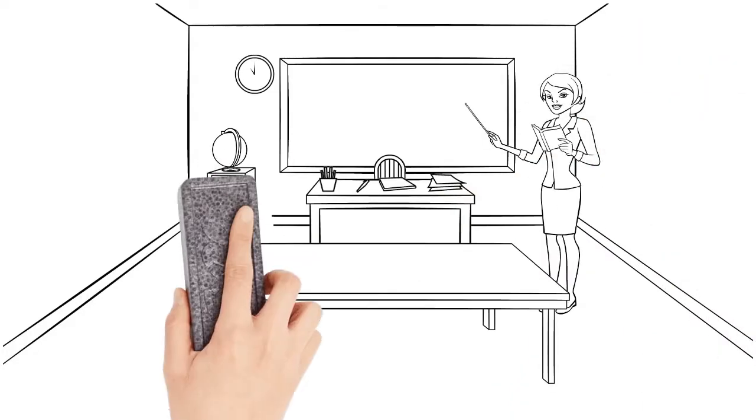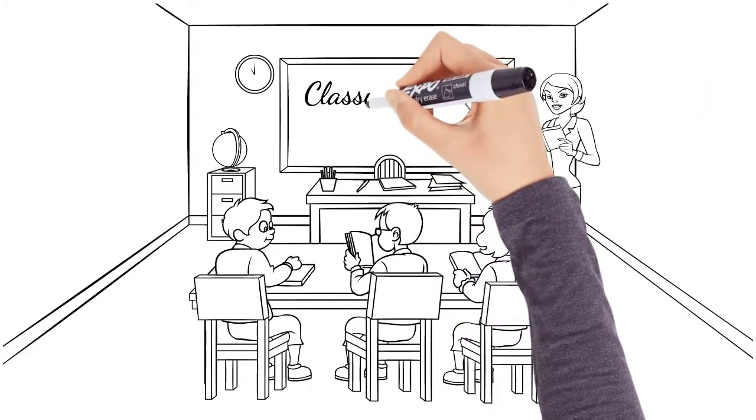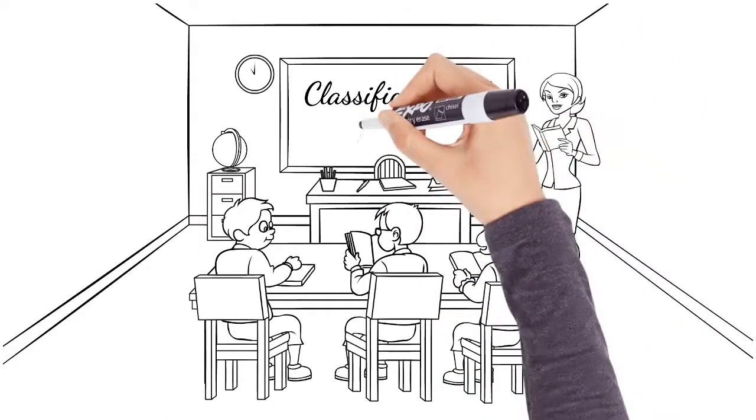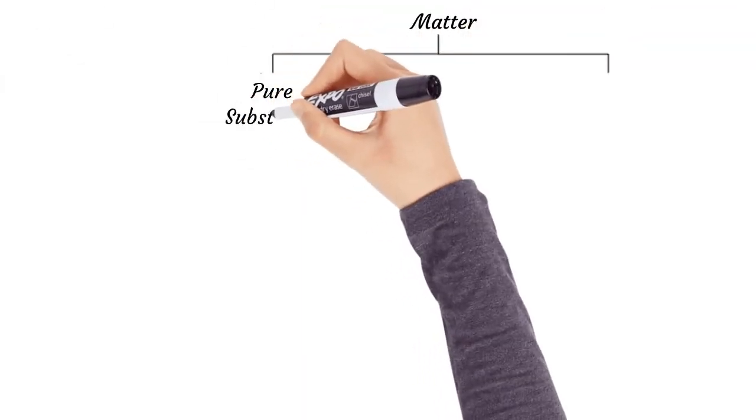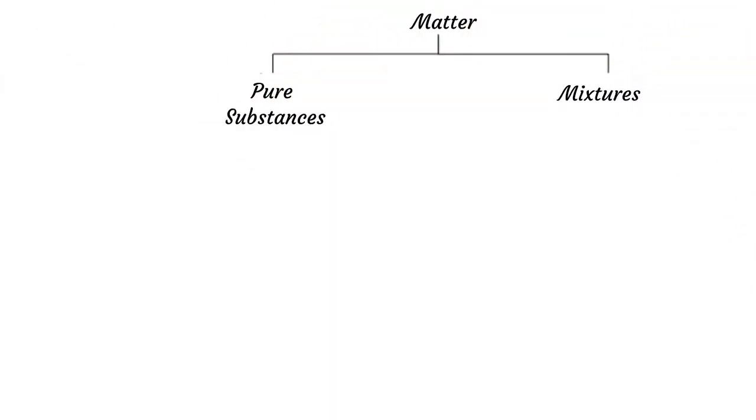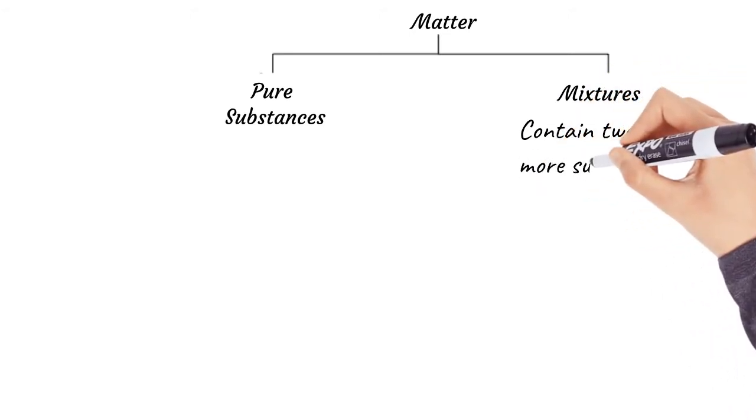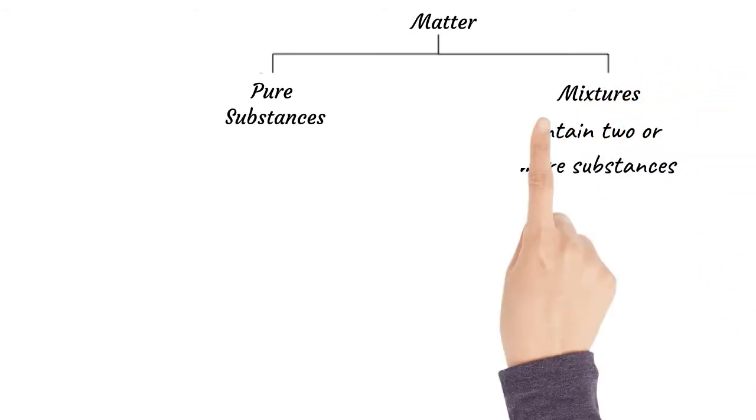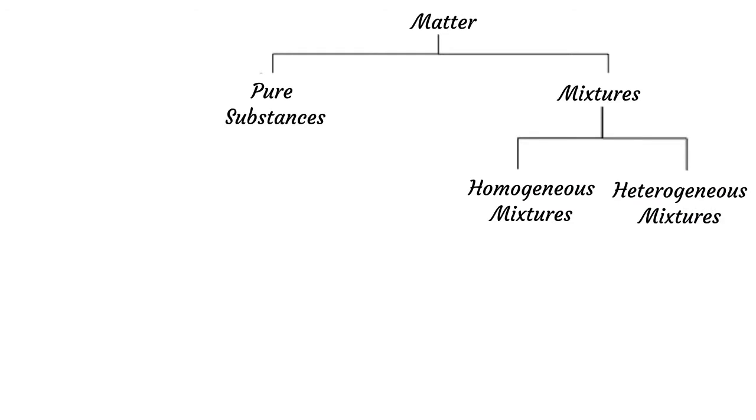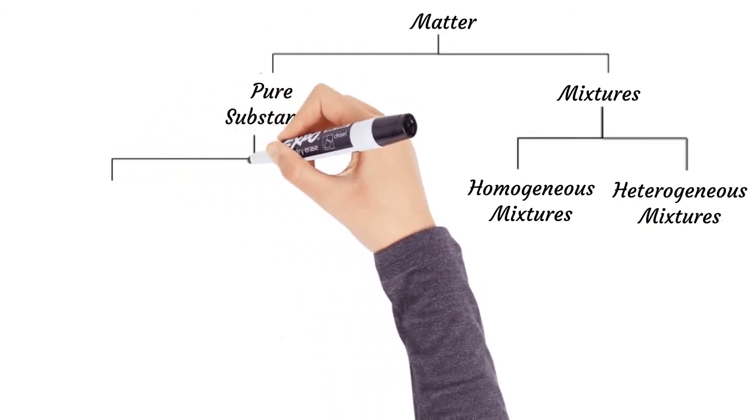Welcome to Chem Whiteboard. Let's review and summarize types of matter. All matter can be pure substances or mixtures. Mixtures are made of two or more substances and can be homogeneous or heterogeneous. Pure substances can further be categorized into elemental substances and chemical compounds.